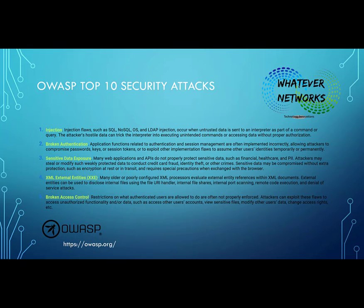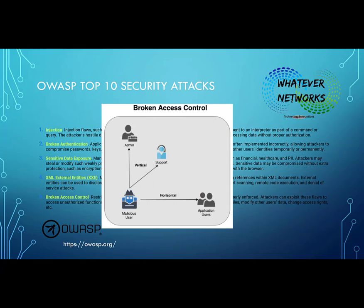Number five is broken access control. Rules restricting what authenticated users are allowed to do are not properly enforced. Attackers can exploit these flaws to gain unauthorized access to data or resources, and may use another account to view sensitive files or modify other users' data. Broken access is where you may be able to take your credentials and move into an administration role or take control of somebody else's user account.